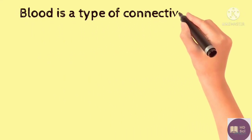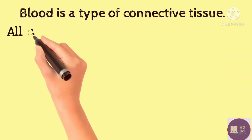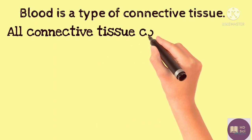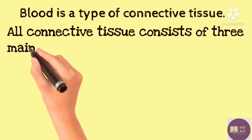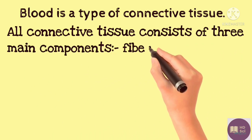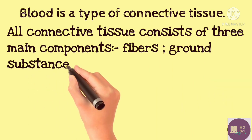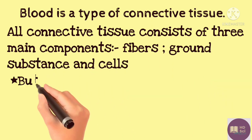Blood is a type of connective tissue. All connective tissue consists of three main components: fibers, ground substances, and cells.